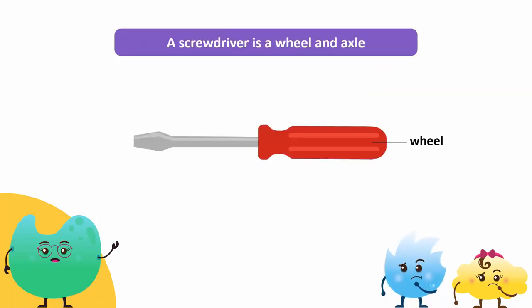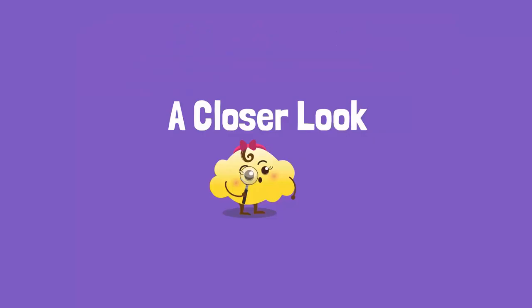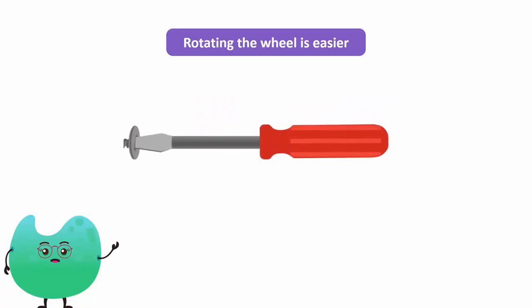The handle of the screwdriver is the wheel as its diameter is greater compared to the diameter of the shaft, while the shaft is the axle. Let's have a closer look. To open a screw with the help of the shaft of the screwdriver, we need to exert a lot of effort. This is because the diameter of the shaft is small.